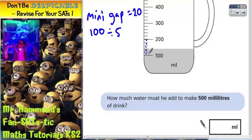So we're going 100, 120, 140, 160, 180, 200, 220, 240, 260, 280, 300, 320, 340, 360, 380, 400. So this idea that the mini gap is worth 20 millilitres seems to fit in.